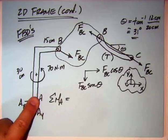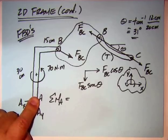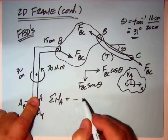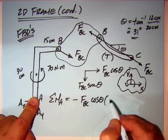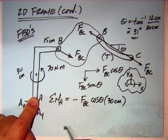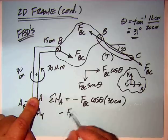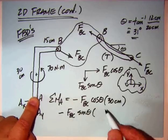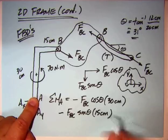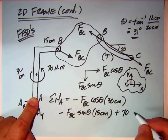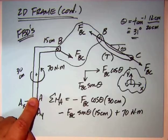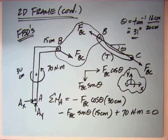If we're holding it here, the 70 newton-meter is a positive couple moment, but the other two produce negatives. So the first one, it doesn't matter which one we do first: minus FBC cosine theta times its moment arm, which is 30 centimeters, minus FBC sine theta times its moment arm, which is 15 centimeters. And then we have our positive 70 newton-meters, and we'll do units later, equals zero.